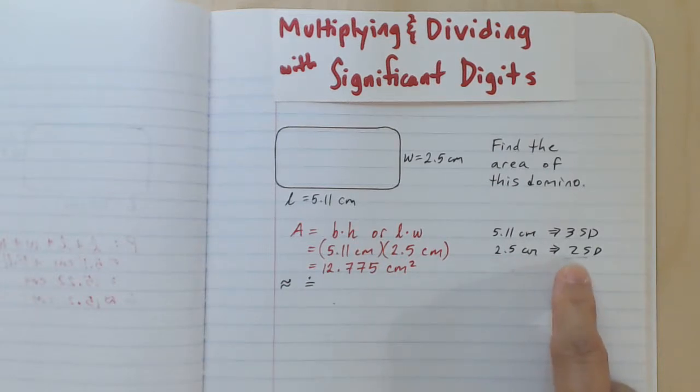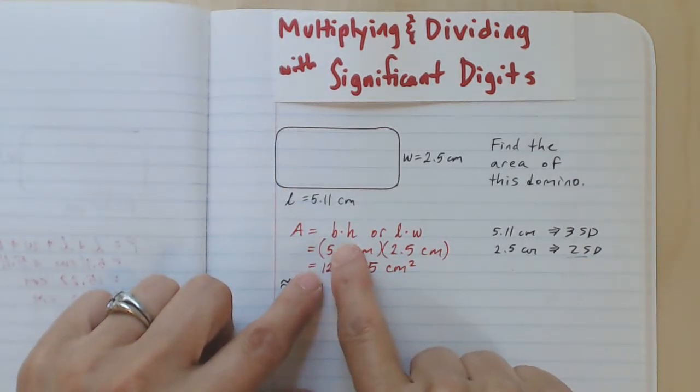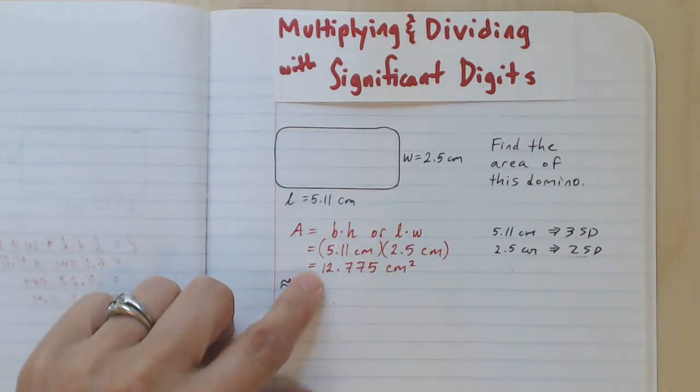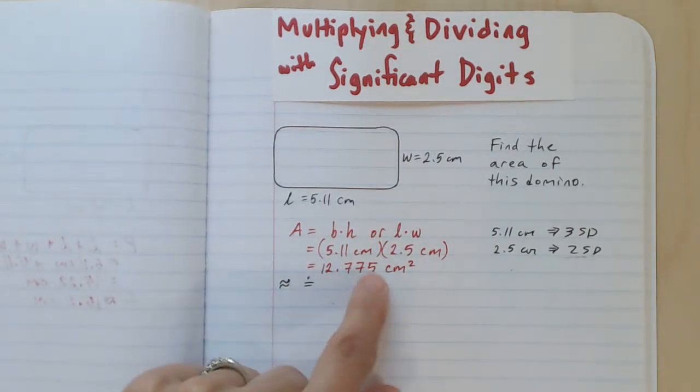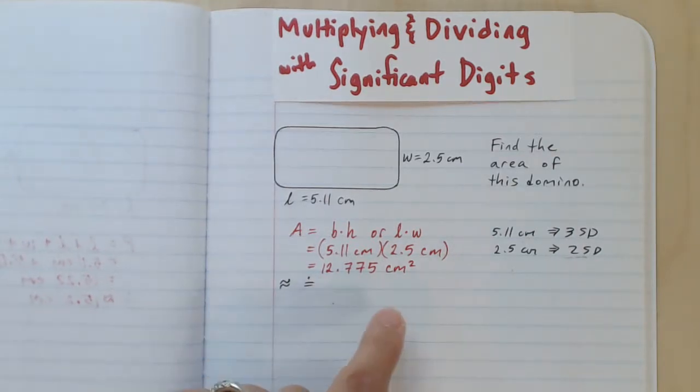So I've noted that over here, 5.11 has three sig digs, 2.5 has two sig digs. So when we go ahead and do our arithmetic here, area is base times height or length times width, call it what you want. When we carry out this multiplication, it turns out that it's equal to 12.775 square centimeters.